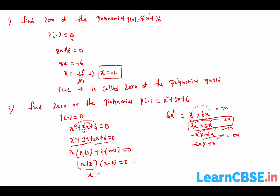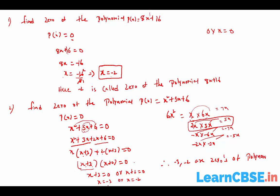Since the product equals 0, either one term must be zero. So either X plus 3 equals 0 giving X equals minus 3, or X plus 2 equals 0 giving X equals minus 2. Therefore minus 3 and minus 2 are the zeros of the polynomial P of X equals X squared plus 5X plus 6.